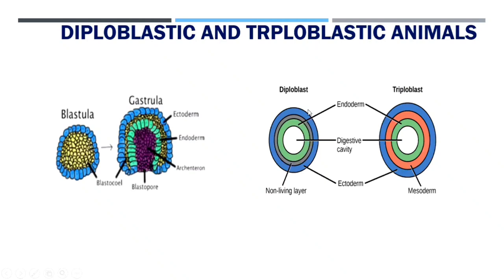If there are only two germ layers during gastrulation, that is diploblastic. If there are three germ layers during gastrulation, those animals are called triploblastic.